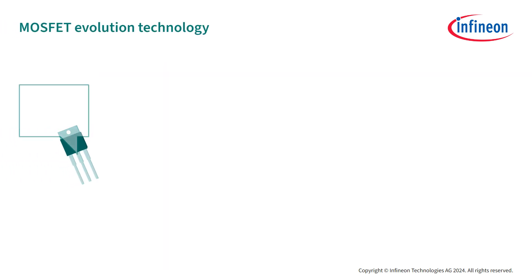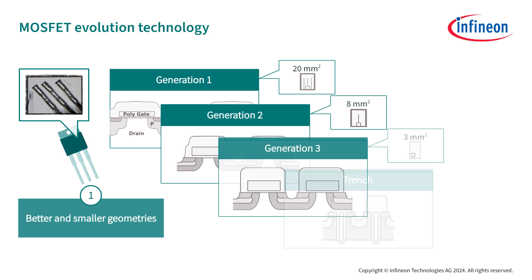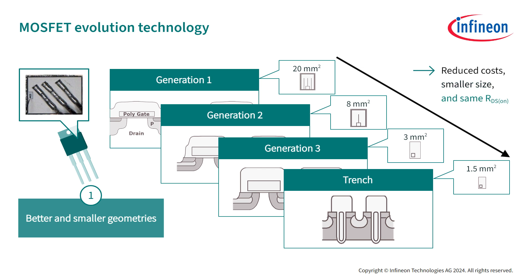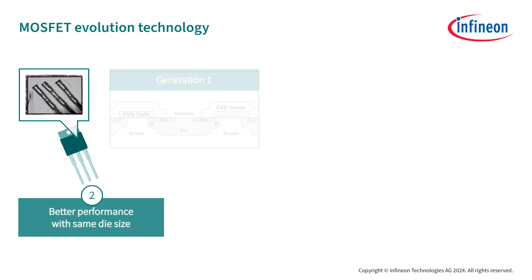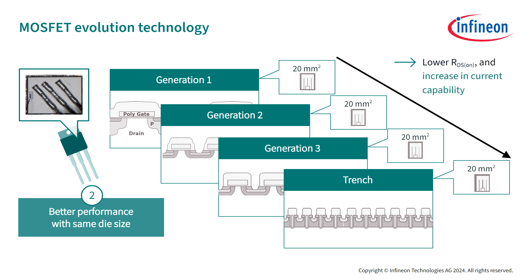MOSFETs are constantly being improved and refined for two main reasons. One is to offer better, smaller geometries of the silicon inside, which helps to reduce costs and enables the use of smaller devices while maintaining the same RDS-ON compared to previous MOSFET generations, for better scalability. The second reason is to offer a better performing device with the same die size as previous generations — lowering the RDS-ON leads to an increase in current capability, which, for the same footprint, enables an increase in power.